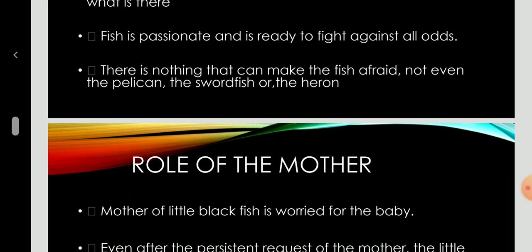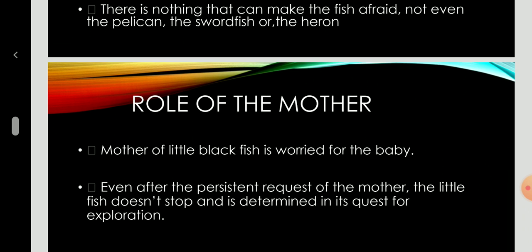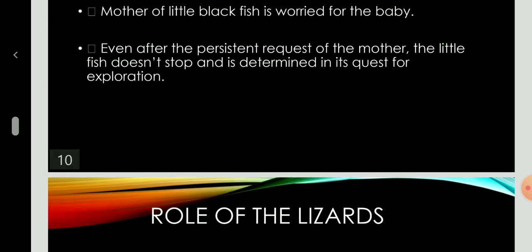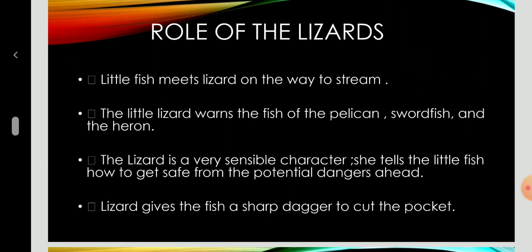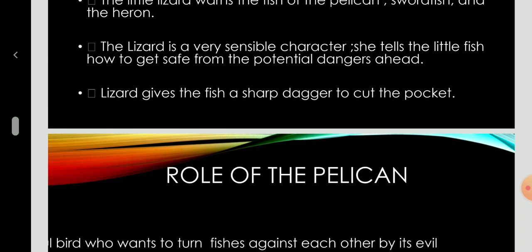Role of the mother: the mother of the little black fish is worried for the baby. Even after the persistent requests of the mother, the little fish doesn't stop and is determined in its quest for exploration. Role of the lizard: the little fish meets the lizard on the way to the stream. The lizard warns the fish of the pelican, swordfish, and the heron. The lizard is a very sensible character who tells the little fish how to stay safe from the potential dangers ahead. The lizard gives the fish a sharp dagger to cut the bird's pocket open.